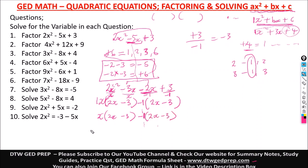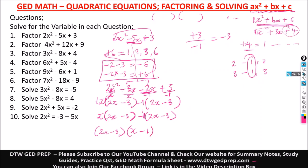Now we have x(2x minus 3) and negative 1(2x minus 3). The common factor between both groups is (2x minus 3). We factor it out, giving (2x minus 3)(x minus 1). That is our factored answer for number 1.